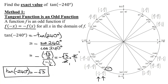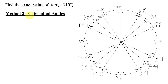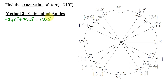The second method uses coterminal angles, as the trig functions of coterminal angles are equal. Taking the given angle of negative 240 degrees, I need a positive angle that's coterminal with it. I add one revolution — and since I'm in degrees, that's 360 degrees. Negative 240 degrees plus 360 degrees is 120 degrees.